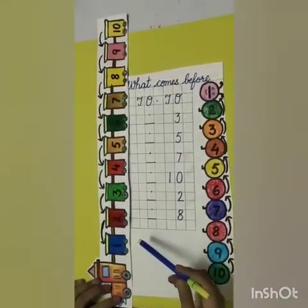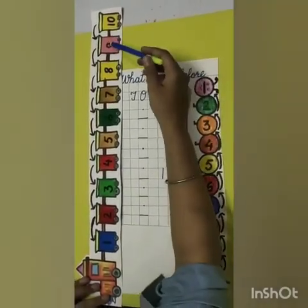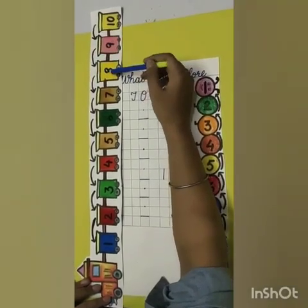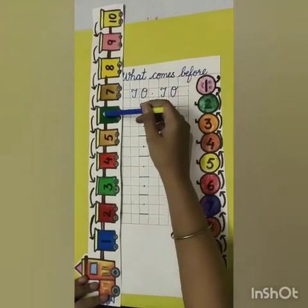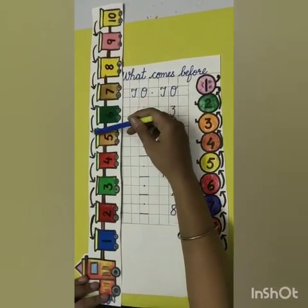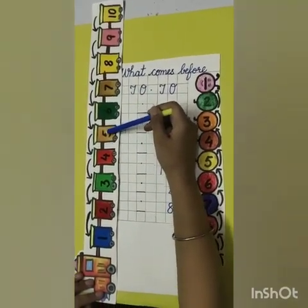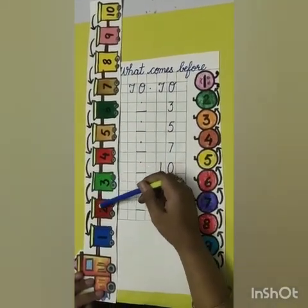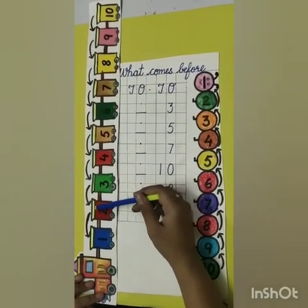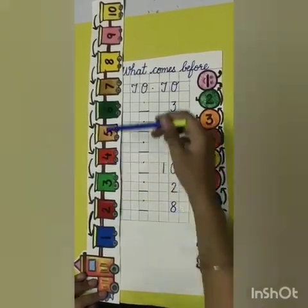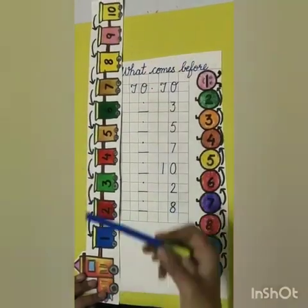Okay, now let's check. Tell me, what comes before 9? 8. What comes before 6? 5. What comes before 3? 2. And what comes before 2? 1. Tell me, what comes before 10? 9.